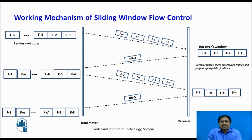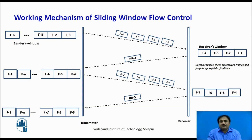Let us understand the basic working mechanism of sliding window flow control. There are two sides shown in the figure — one is the transmitter and the other is the receiver. At the transmitter side, we manage one sender's window, and at the receiver side, we manage one receiver's window. The size of both windows are the same. At the sender side, the sender stores all the frames it wants to transmit, and sends frames F1, F2, F3, and F4 on the channel.